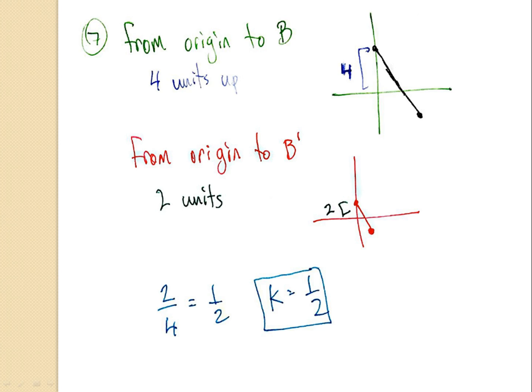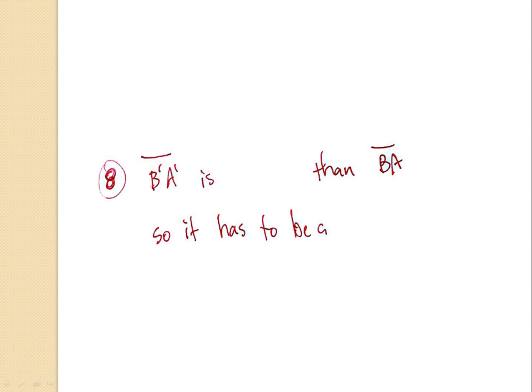Now that everyone has number seven written on their paper, let's take a look at number eight. It's asking what type of dilation you've seen. B prime, A prime is definitely smaller than BA. There should be a hand up to tell you what kind of dilation that is. Did that person say reduction? Because they're right — it is a reduction. Make sure you have this written on your paper, check your neighbor left and right and in front of you, and go ahead and pause the video.